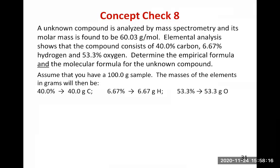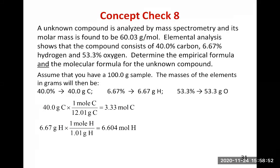Now that we have the masses, we convert them to moles. For carbon: 40.0 grams divided by 12.01 grams per mole gives 3.33 moles of carbon. For hydrogen: 6.67 grams divided by 1.01 grams per mole gives 6.604 moles of hydrogen. For oxygen: 53.3 grams divided by 16.00 grams per mole gives 3.33 moles of oxygen.